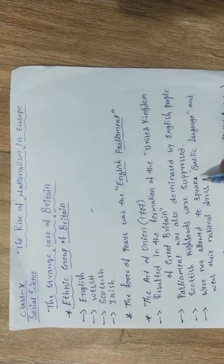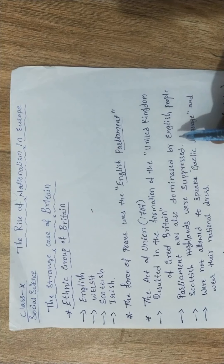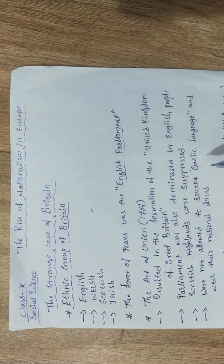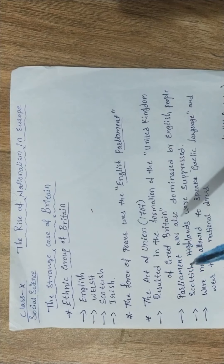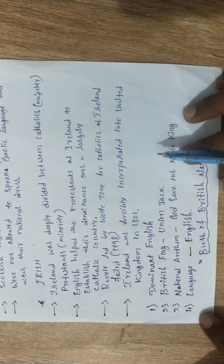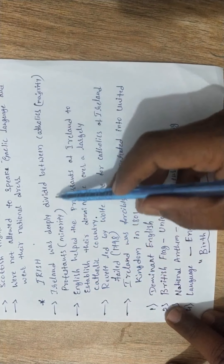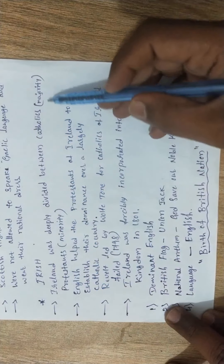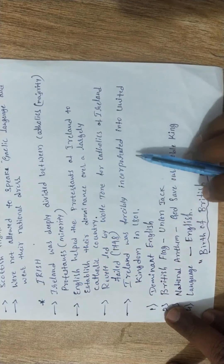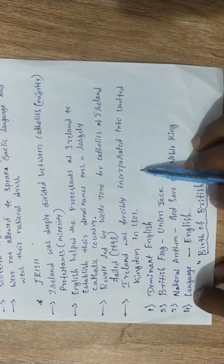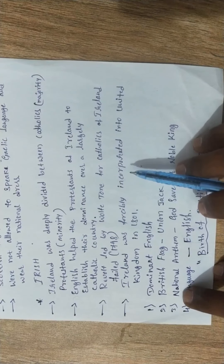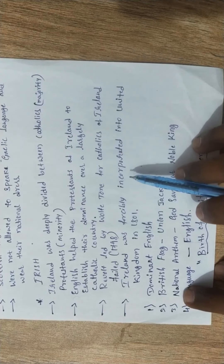This is how the United Kingdom of Great Britain started unification by absorbing the Scottish. The same general approach was applied to the other ethnic groups as well. For the Irish, however, the method was different. Ireland was deeply divided between Catholics — the majority — and Protestants — the minority.